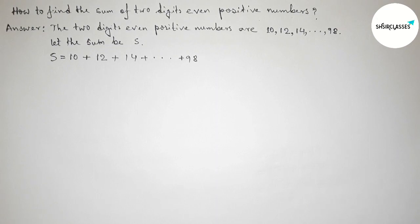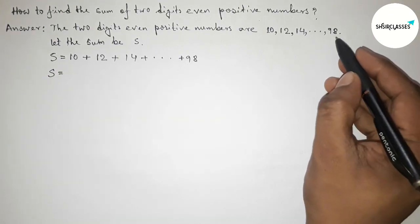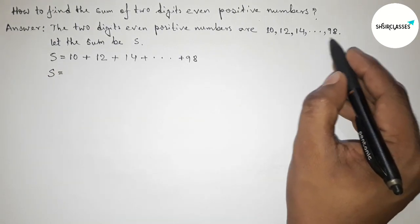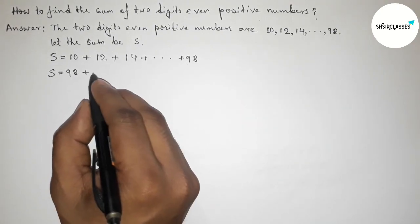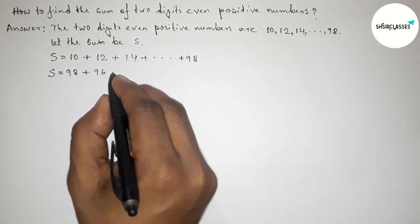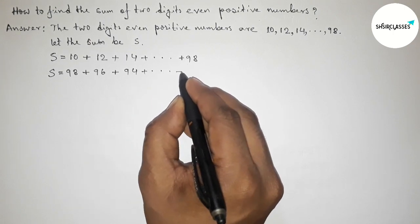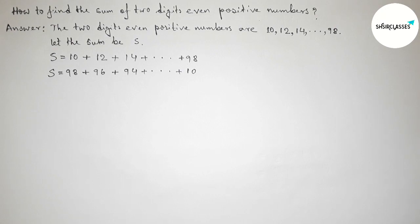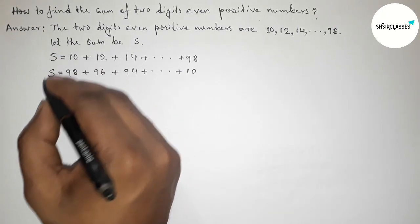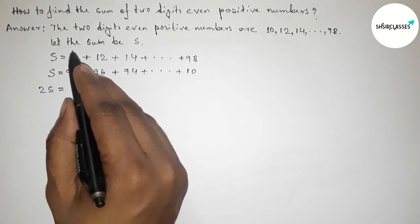We can also write S in reverse: S equals 98 plus 96 plus 94, adding from 98 down to 10. Now adding these two expressions of S together gives us 2S.